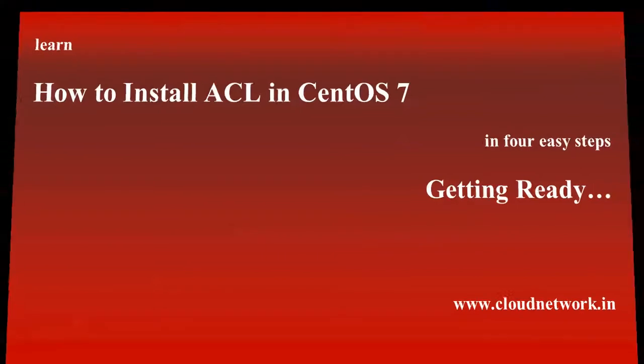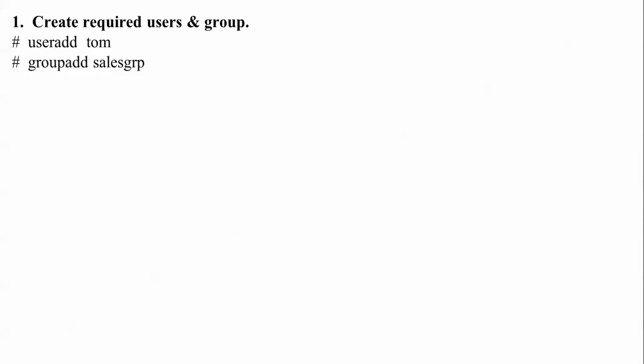This is my Lab 6, where I'm going to explain Access Control List. This is a four-step easy way to set it up. First, I'm going to create users and groups. I'll start with username 'tom', then add a group named 'sales', then another group named 'fing'. There will be one user and two groups. After that I'm going to create a folder called 'sales department'.